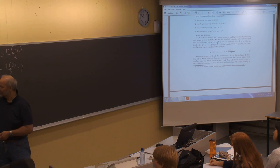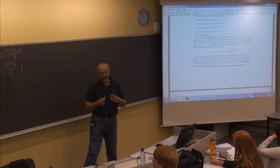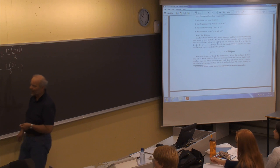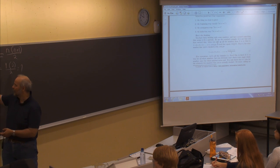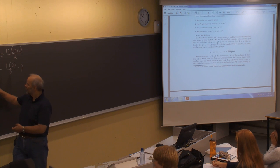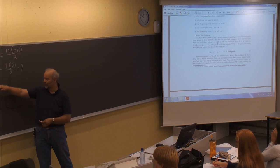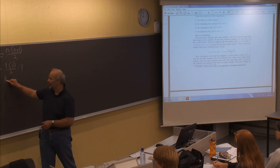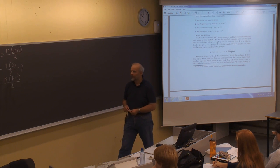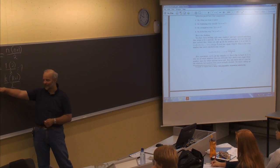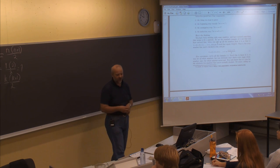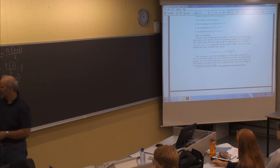For the assumption step, we assume that for one particular value k, the series one plus two plus three up to k equals k times (k plus one) divided by two. This is now the assumption. The induction step — the tricky part — requires us to prove that when we increase by one from k to k plus one, the formula is still true.